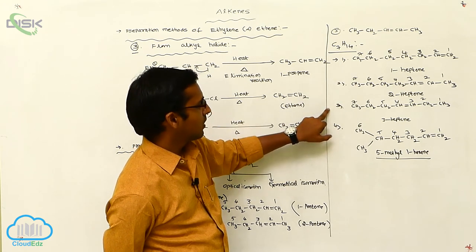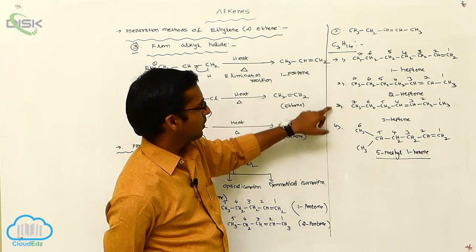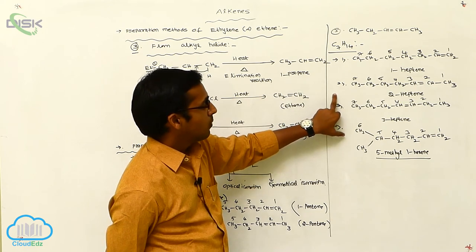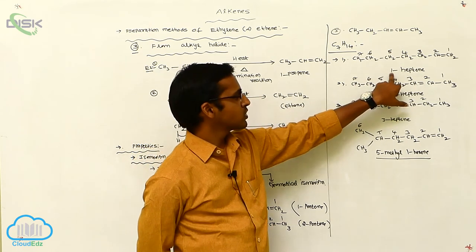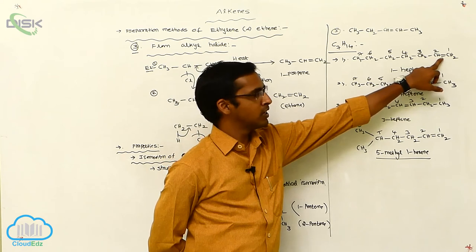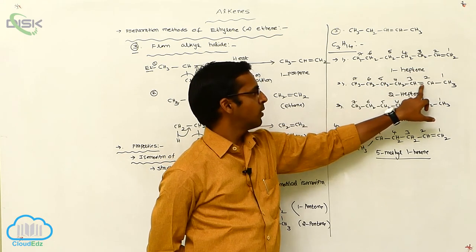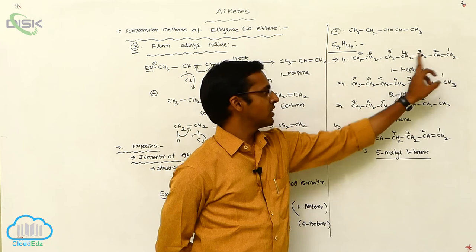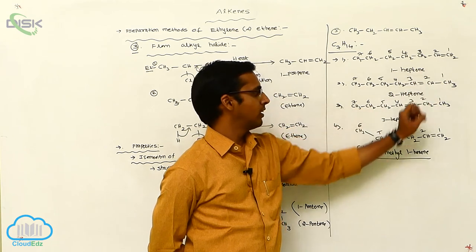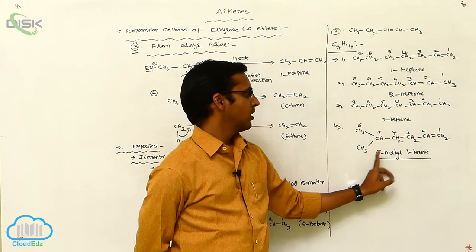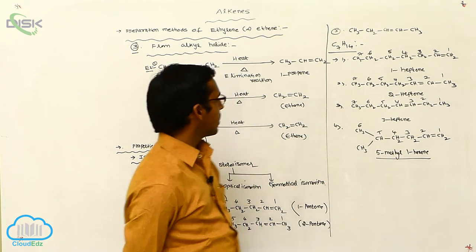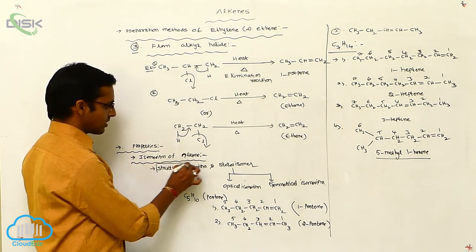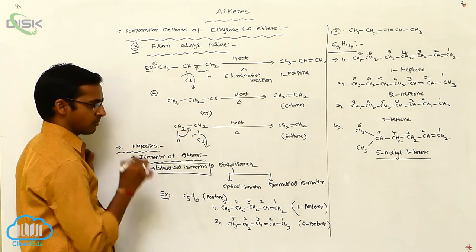The second and third ones are positional isomerism. The first is a straight chain — straight chain means n-chain, n-heptene. The fourth is an iso-chain. So these are your structural isomers. Alkenes exhibit structural isomerism.